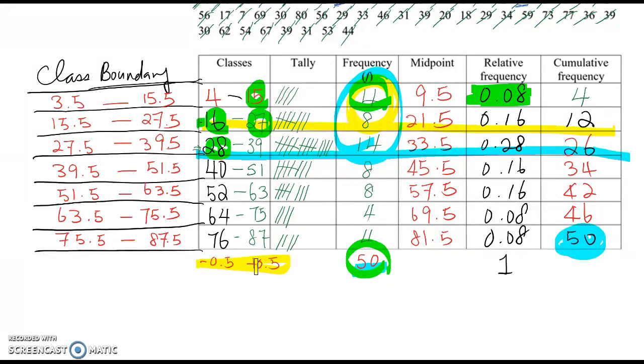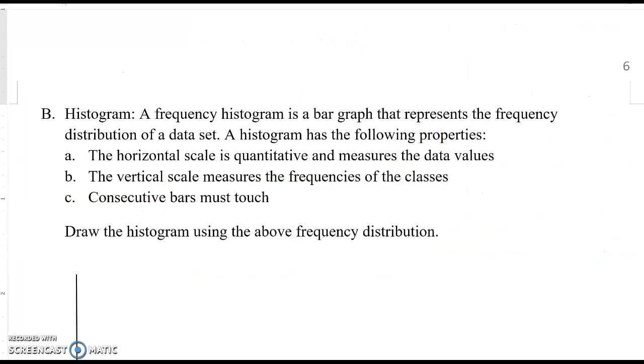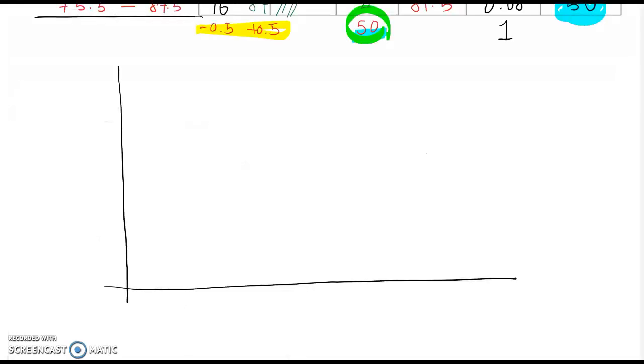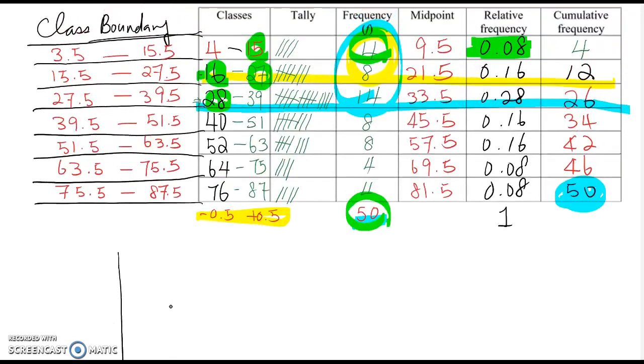So then let's start drawing the histogram. From the lecture note, the horizontal scale is quantitative and measures the data value. In this case, the horizontal scale must be class boundary. It is up to you where you begin, but I recommend just make maybe one unit away, and then that value will be the least class boundary value, which is 3.5.